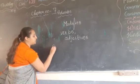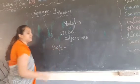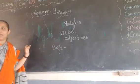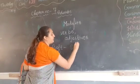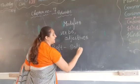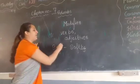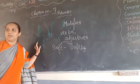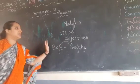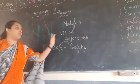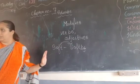For example, 'soft' — by adding 'ly' we get 'softly.' By adding a suffix we have modified the word. This modification is what makes an adverb. So 'softly' is the adverb form of 'soft.'